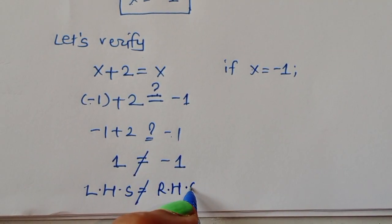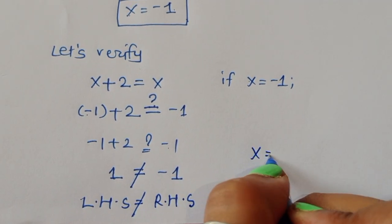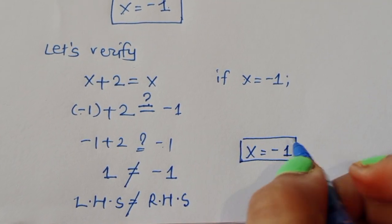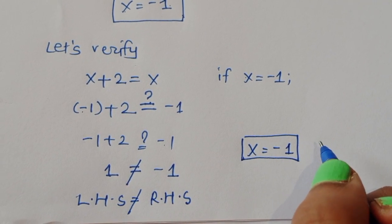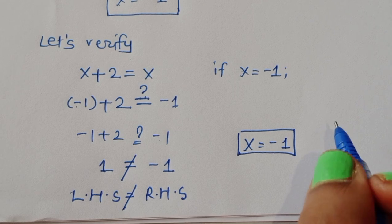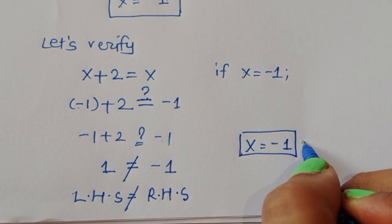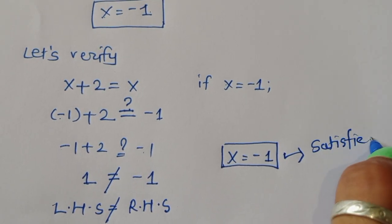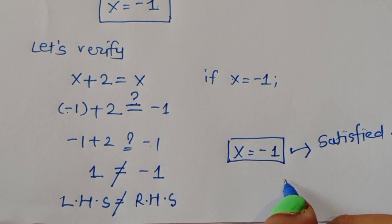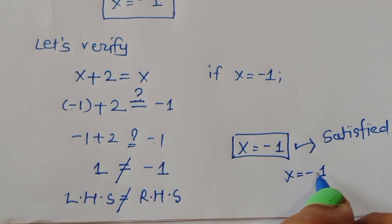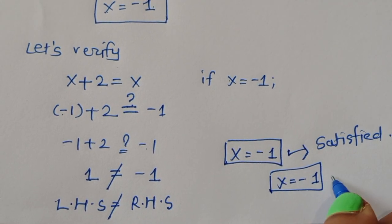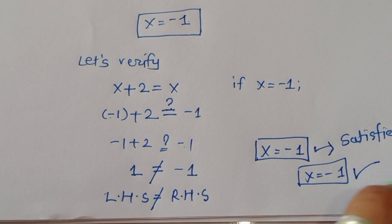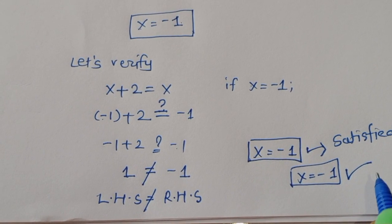So the value x = minus 1 is not a correct solution for this equation, because x belongs to real numbers and this is not satisfied. Therefore, there is no real solution.